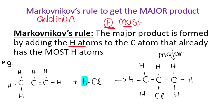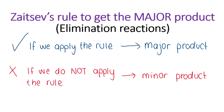If I asked you to form the minor product instead, you would simply ignore what the rule says — do the opposite. So you would put the chlorine over here and the hydrogen over here, and then fill out all the other hydrogens. But what about an elimination reaction? Markovnikov's rule applies to addition reactions only. For elimination reactions, we need to use Zaitsev's rule.